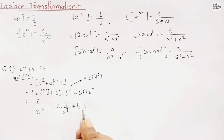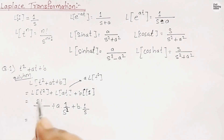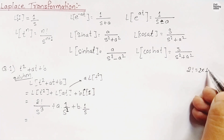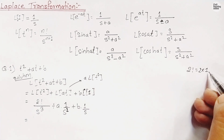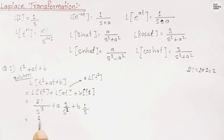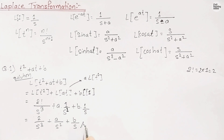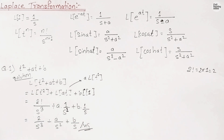And b·L{1} = b·(1/s). Rewriting: 2! = 2×1 = 2, so the final answer is 2/s³ + a/s² + b/s. Isn't that simple? Let's see one more example.